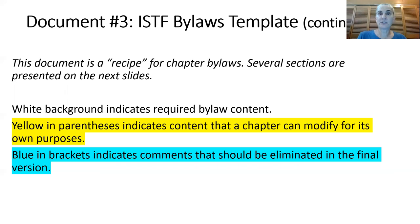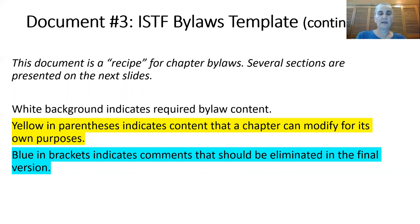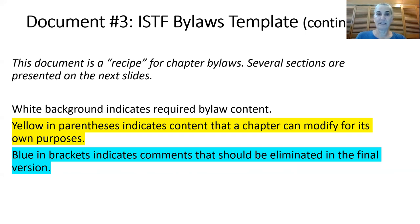Let's look at some sections of the bylaws template briefly. This is a recipe to make it easier for you to create your bylaws. Parts on a white background in the slides indicate required content. If it's in yellow in parentheses, it indicates content that the chapter can modify for its own purposes. If it's blue, those are instructions that should be eliminated in the final version of the bylaws.